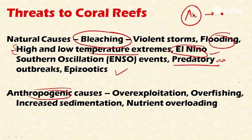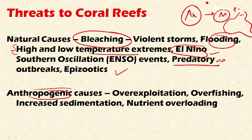There is a controversy regarding the Adani group of companies taking up coal mining in Australia, in Queensland, where the Great Barrier Reef is present. Because of this mining activity, the Great Barrier Reef is under threat, and many environmental activists are working to stop this project. Thermal pollution and intensive fishing are also important reasons for the destruction of coral reefs throughout the world.